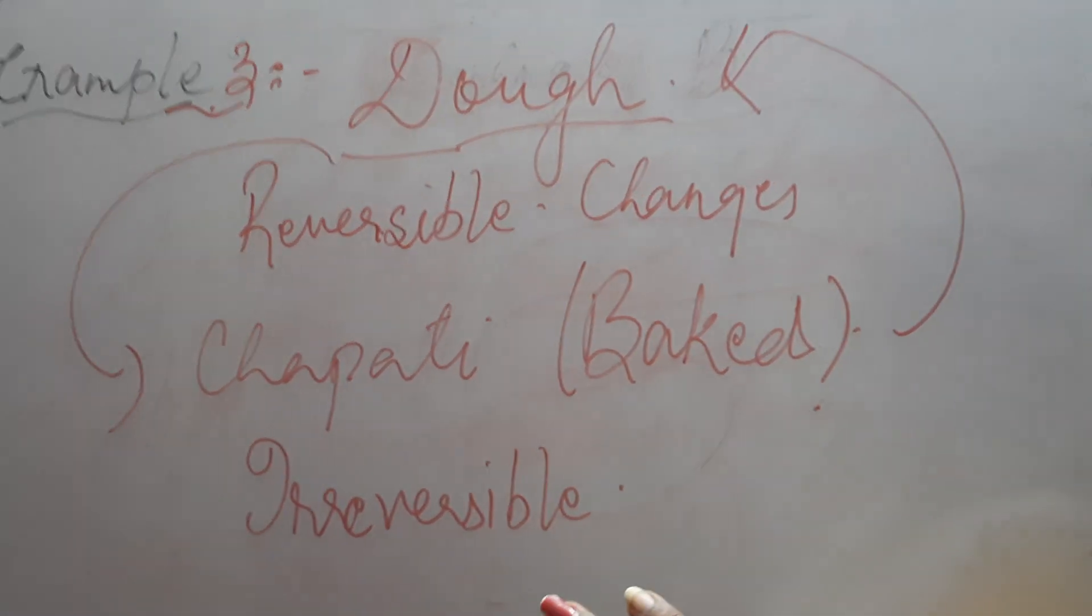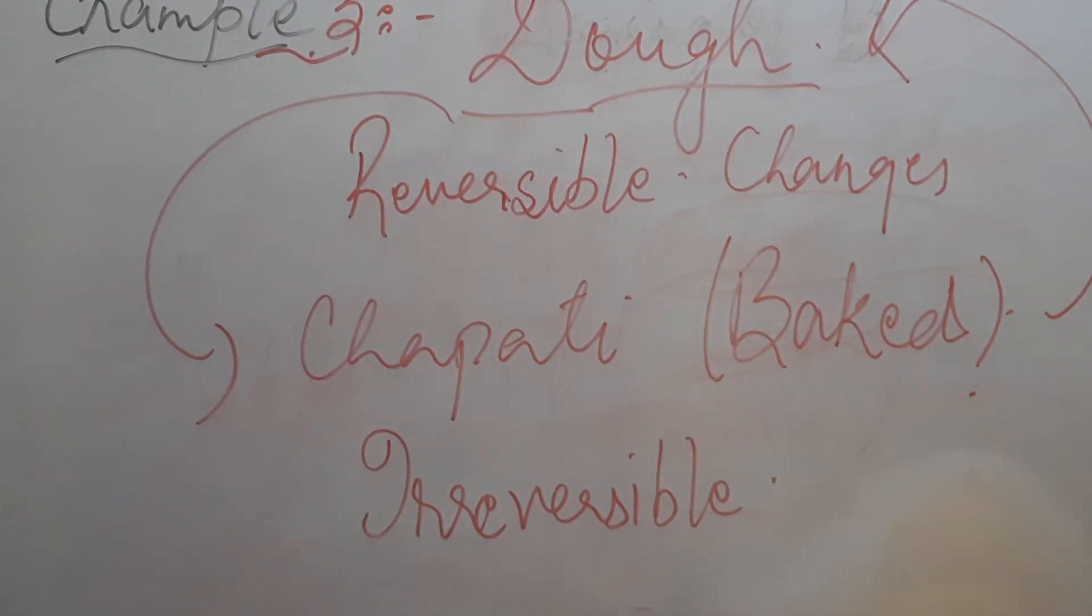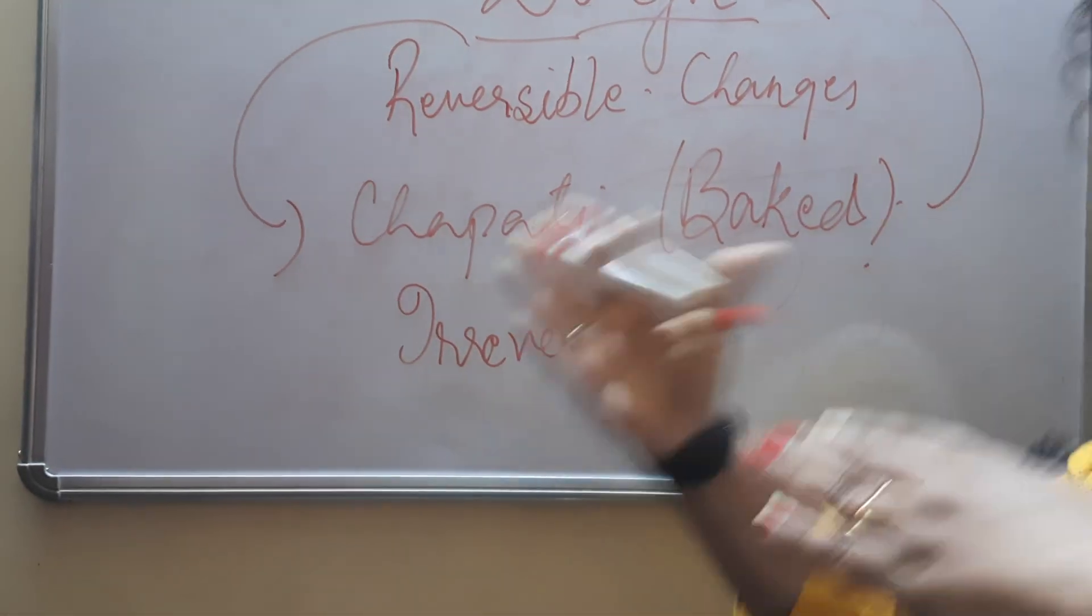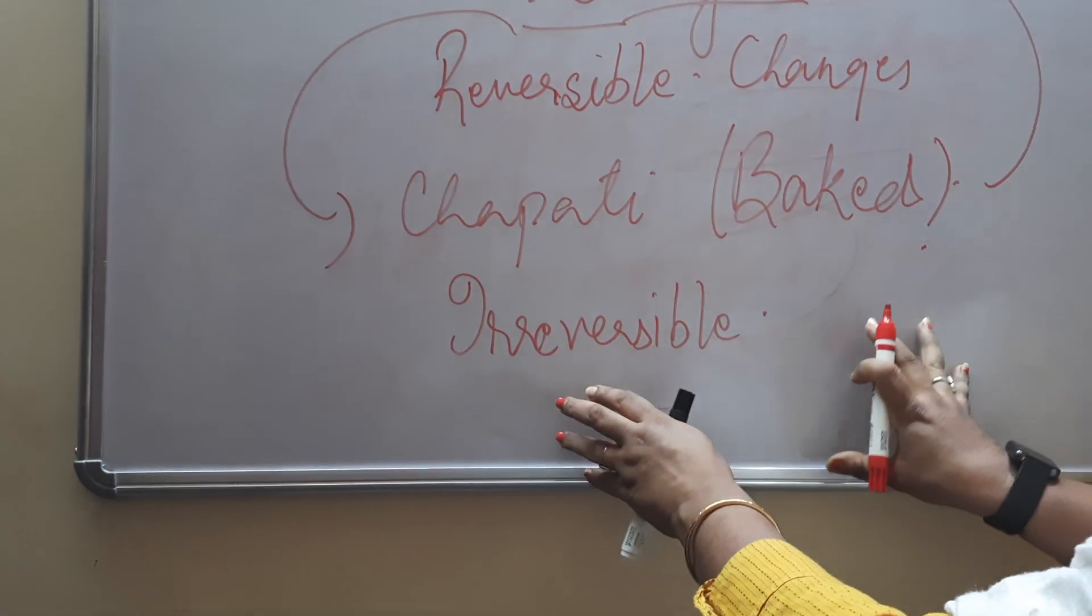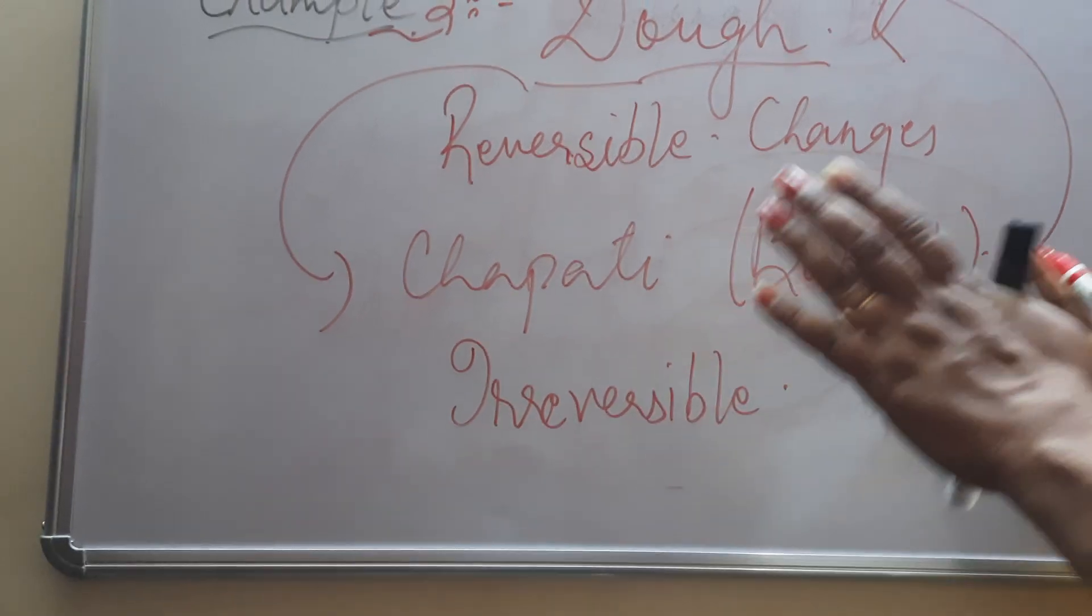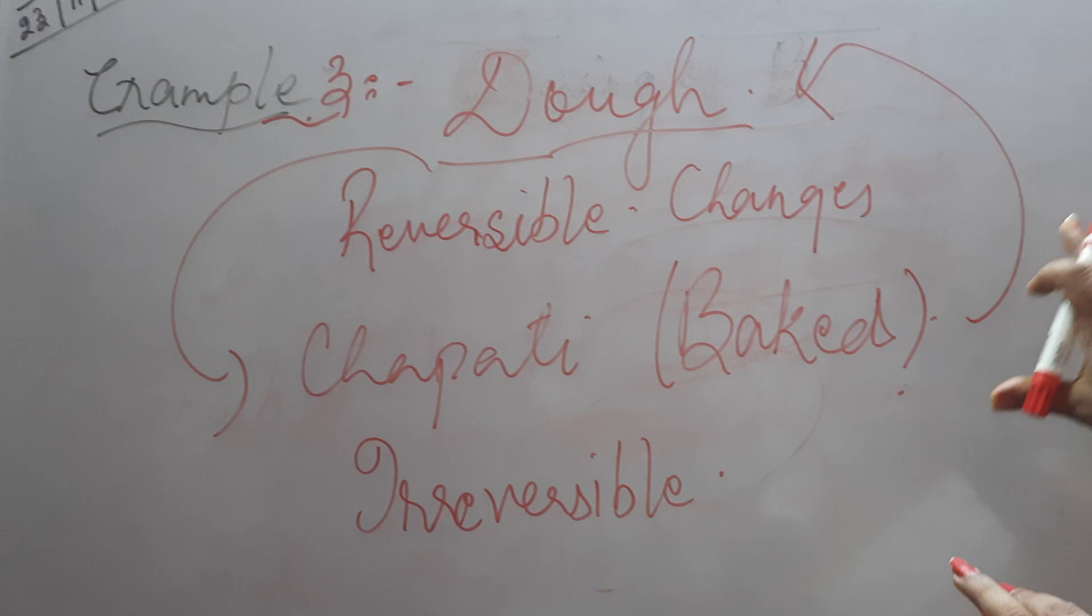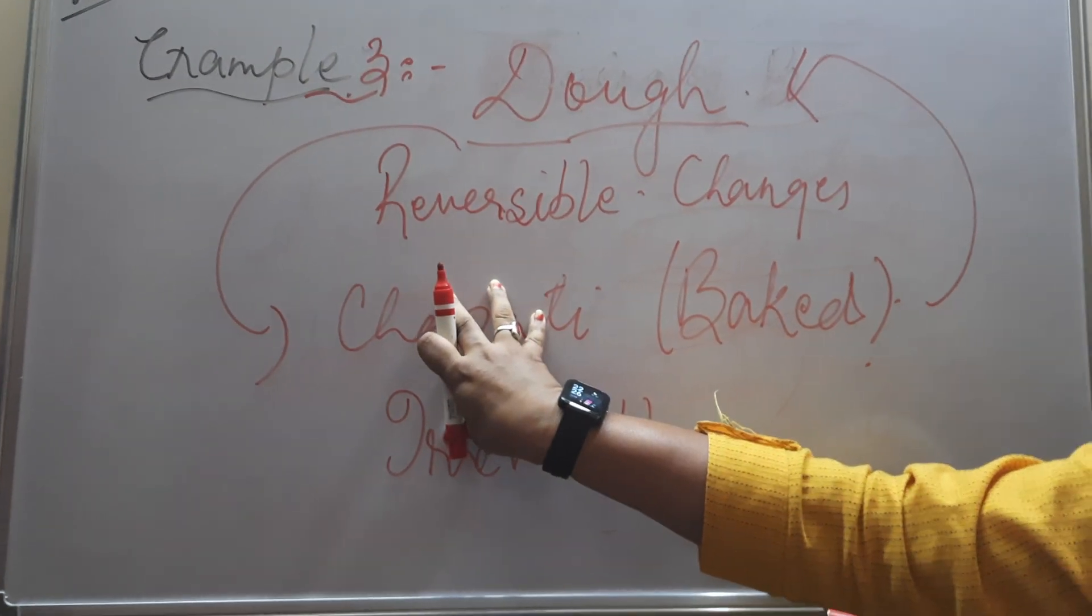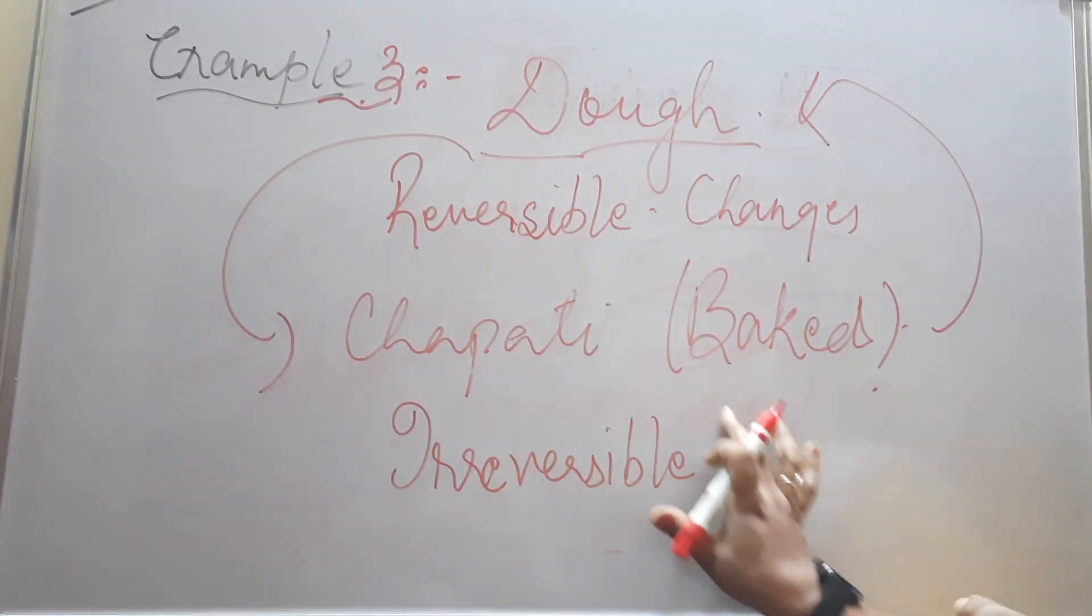So, children always remember, when I speak for reversible, reversible means naya koi substance nahi bana hai. Uska state badal chuka hai. Ya solid sa liquid, liquid sa gas. But irreversible mihi state badal neke saath saath, uske property bhi badal gai. Yeh ek kaccha aata tha, ab paka hua aata hai. So, pake huay aata se, you cannot make again that raw dough. So, it is an irreversible change.